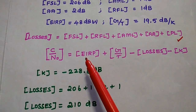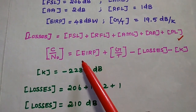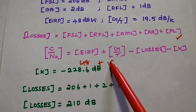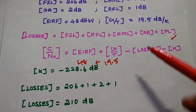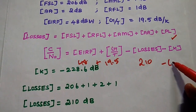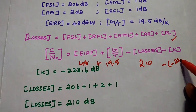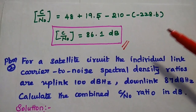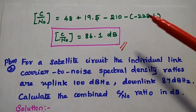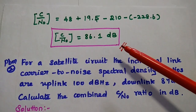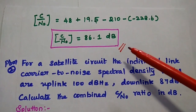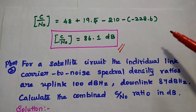In the next step, we substitute the values: EIRP is 48, G/T is 19.5, overall losses are 210, and K is −228.6. After substituting all values, we get C/N = 86.1 dB. This is the carrier-to-noise spectral density for the given values.